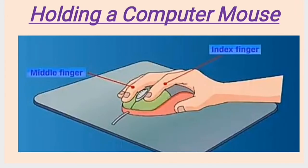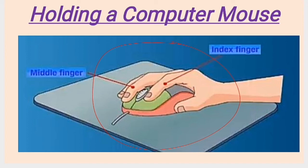So now these are the two types of mouse: mechanical or ball mouse, and optical mouse. Now we are going to learn how to hold a computer mouse properly. See in this figure — the mouse is placed on the mouse pad. We have to use the index finger and middle finger to hold the two buttons. The index finger is the finger that is near to the thumb.